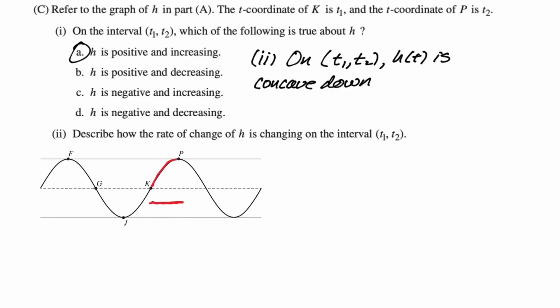So on the interval (t₁, t₂), h(t) is concave down. When a curve is concave down, its rate of change is going to be decreasing. So we're just going to say, therefore, the rate of change of h is decreasing on (t₁, t₂). You walk in knowing that fact and you walk out with those points. That's the entire question. I hope this was helpful and good luck.